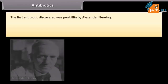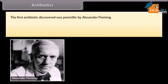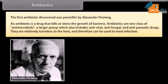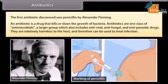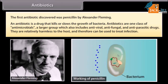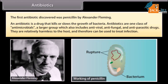Antibiotics. The first antibiotic discovered was penicillin by Alexander Fleming. An antibiotic is a drug that kills or slows down the growth of bacteria. Antibiotics are one class of antimicrobials, a larger group which also includes antiviral, antifungal and antiparasitic drugs. They are relatively harmless to the host and therefore can be used to treat infection. Penicillin works by preventing the production of peptidoglycan, the substance that forms the cell wall. The cell continues to grow without dividing, the wall gets weaker and eventually ruptures.